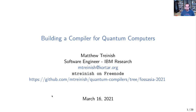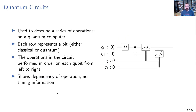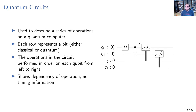Before we can talk about compilers, we need to talk about how people program quantum computers, which brings us to the quantum circuit. A quantum circuit is a visual representation used to describe a series of operations run on a quantum computer. Each row in the circuit represents either a classical bit — the two on the bottom — or a quantum bit, or qubit, the two on the top. You read them from left to right, showing operations that operate on one or two qubits.